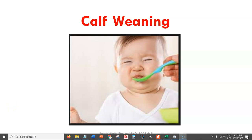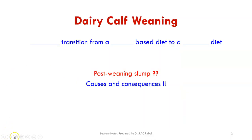This is a lecture on calf weaning. You might wonder why there is a picture of a baby — weaning is not only for calves but also for human babies. Weaning is simply the process where we transition any mammal, be it a human baby or a calf, from a milk-based diet to a solid-based diet. As dairy farm managers or veterinarians, we have to manage weaning of dairy calves.